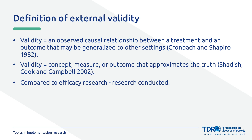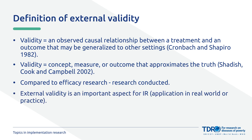External validity is a subset of validity. It refers to how well we can take what we've learned in one place and apply it somewhere else. For example, let's say we found out that a certain treatment works well for river blindness control in rural Nigeria. The external validity of that finding is about how much we can trust that it would work just as well in a different place, like rural Indonesia. Assessing external validity helps us figure out if research findings from one place can be applied to another, making it easier to use research evidence in real-life situations or policies.